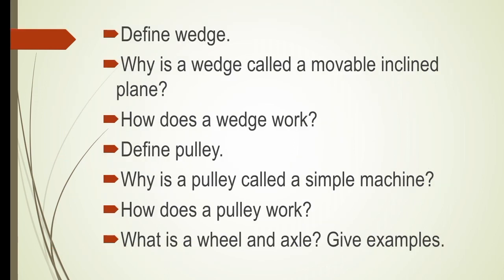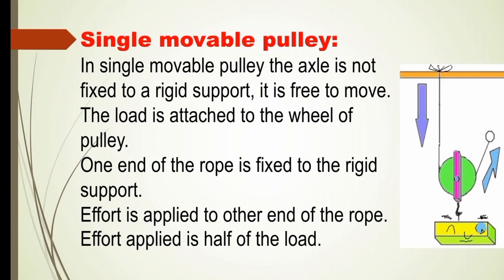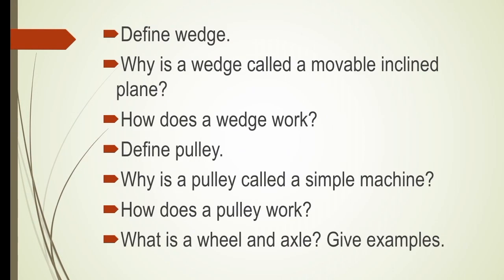Students, you must be able to answer all these questions. Define wedge. Why is a wedge called a movable inclined plane? How does a wedge work? We have discussed these questions already. Define pulley. Why is a pulley called a simple machine? Since a pulley makes our work easier by reducing the effort applied and by changing the direction of applied force, that is why a pulley is called a simple machine. Next, how does a pulley work? In this question, you have to write about both single fixed pulley and single movable pulley. Also, what is a wheel and axle — give examples.